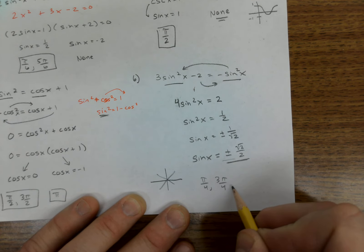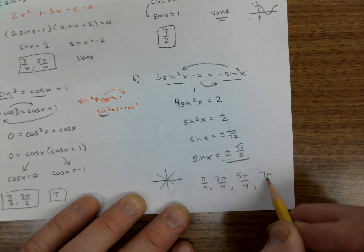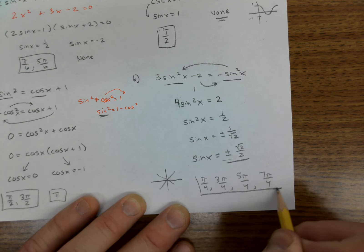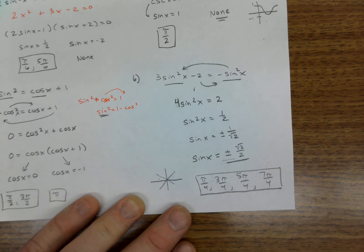So we have π over 4, 3π over 4, 5π over 4, 7π over 4. All four of those angles, all of those 45s. All right, I hope this helps.